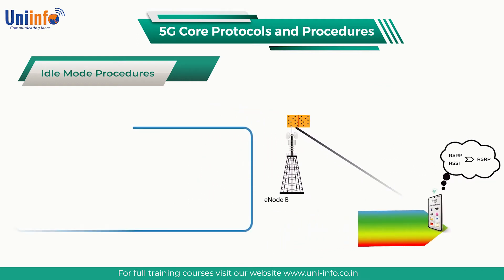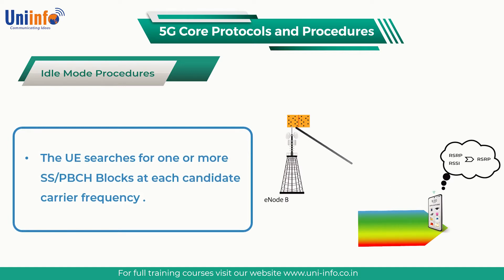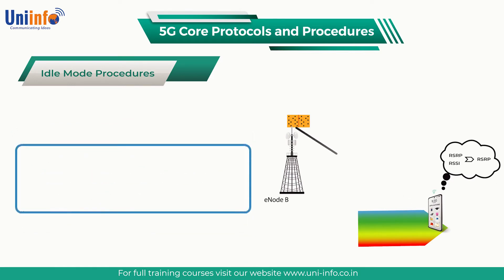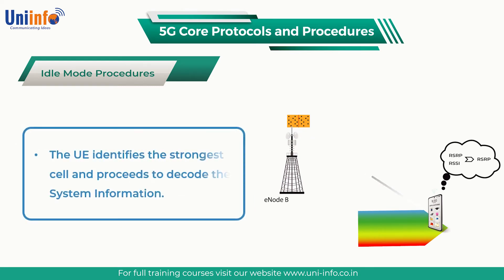The UE searches for one or more SS or PBCH blocks at each candidate carrier frequency. Each candidate carrier frequency has a Global Synchronization Channel Number (GSCN). After finding one or more SS or PBCH blocks at a specific GSCN, the UE identifies the strongest cell and proceeds to decode the system information.